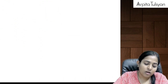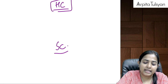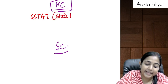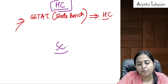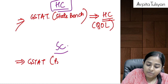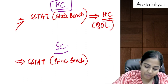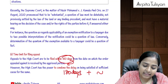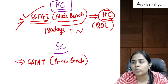For appeal before the High Court: if aggrieved by the order of GSTAT state bench, and the matter involves a question of law, the appeal can be filed before the High Court within 180 days from the date of communication of the order. The High Court can condone delay by any number of days. The appeal is filed in form GST APL-08. If the order was from the GSTAT principal bench, the appeal goes directly to the Supreme Court.